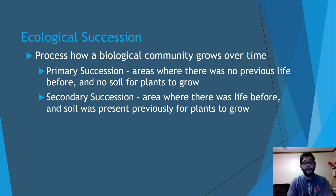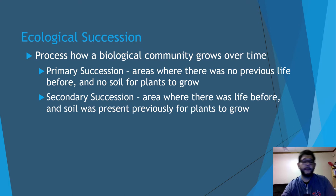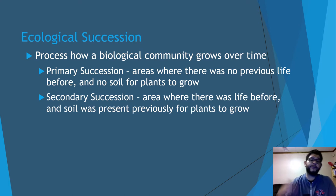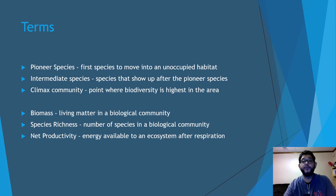The two types are primary and secondary succession. Primary succession is basically where there was no life before and no soil or substrate for plants to grow. Secondary succession is the kind where there was already life before, something disrupted it, it went away, and there was already soil for things to regrow again. That's a big distinction and it may get asked of you on a free response question.